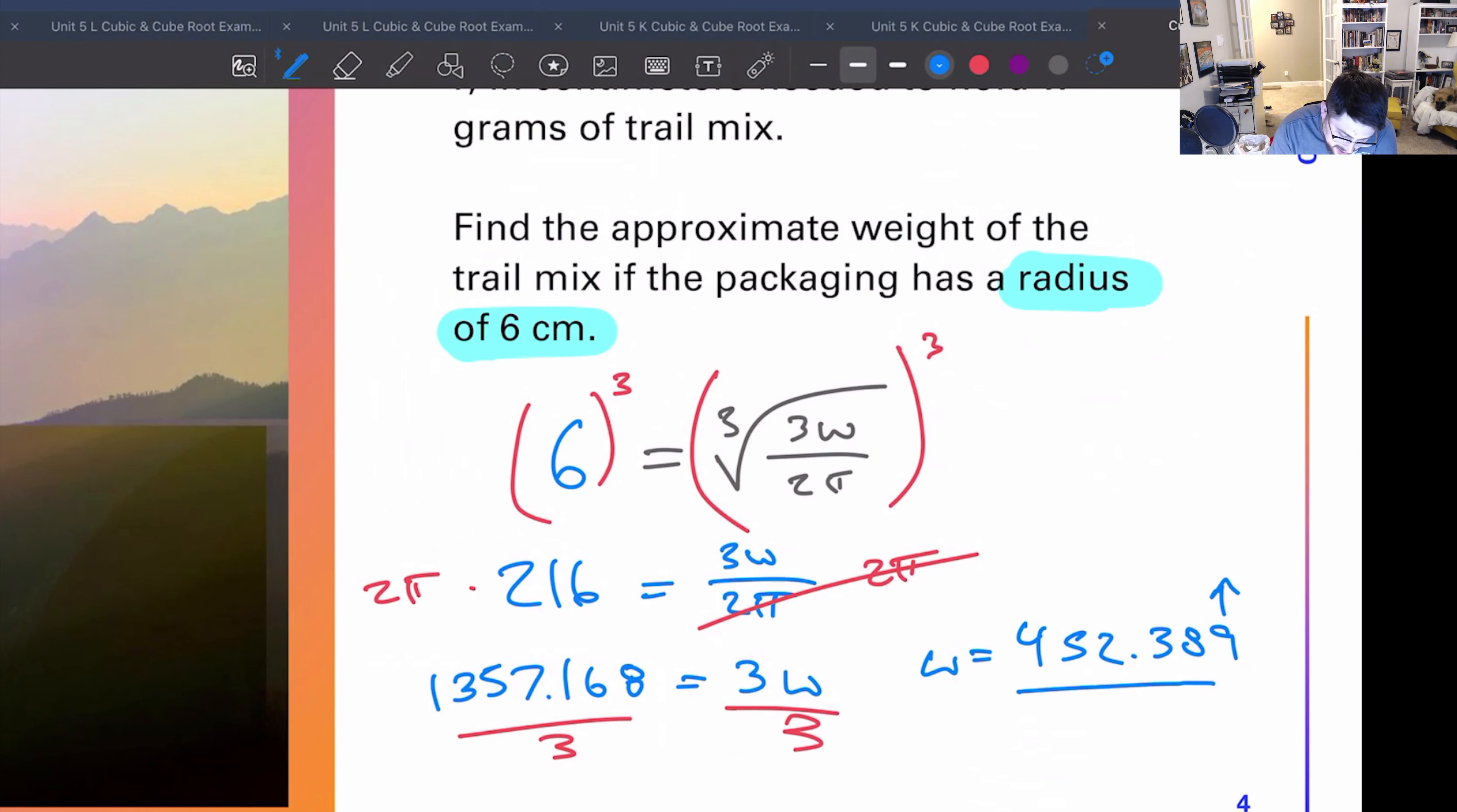And that will give us w equals 452.389. 452.389, I want to round to the hundredths, two decimal places. Now it says go up, so 452, oh this is kind of getting awkward in the way here, 452.39 will be our final answer.